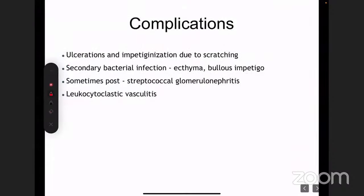There are certain complications. Scabies doesn't usually cause any systemic complications, but very rarely it can cause glomerulonephritis. That happens when scabies is secondarily infected by bacteria like Streptococcus, which can then cause post-streptococcal glomerulonephritis. Scabies as such does not cause glomerulonephritis — it is secondary bacterial infection of a scabies lesion that leads to this.